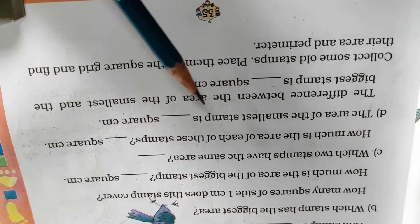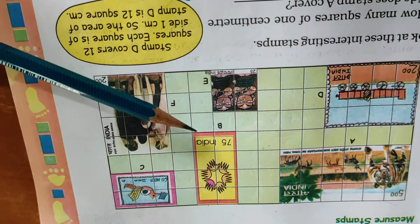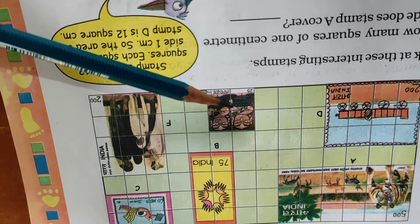The area of the smallest stamp is 1, 2, 3, 4.